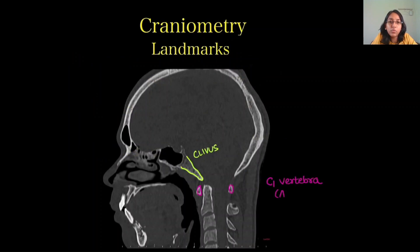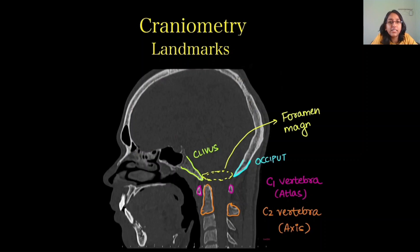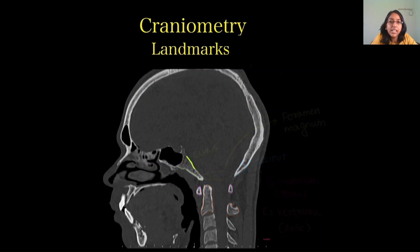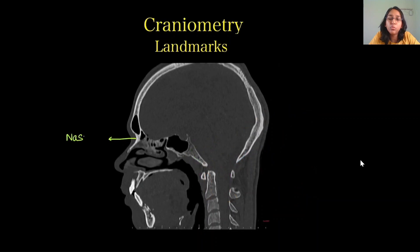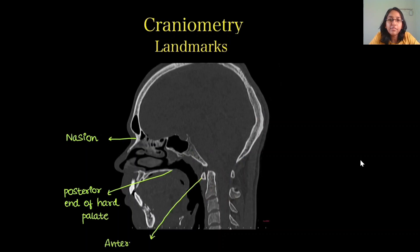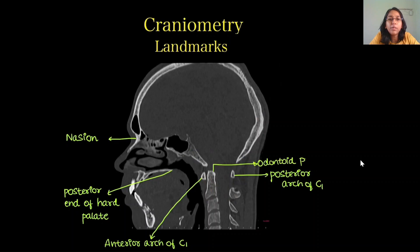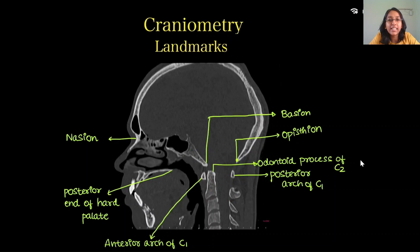The main landmarks are: the clivus, the C1 vertebra also called the atlas, the C2 vertebral body called the axis, and the posterior portion of the occiput called the opisthion. We also have the foramen magnum. Additional landmarks include the nasion, the posterior end of the hard palate, the anterior and posterior arch of C1, the odontoid process of C2 also called the dens, the basion on the clivus, and the tuberculum sellae and dorsum sellae lining the pituitary fossa.